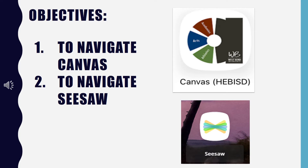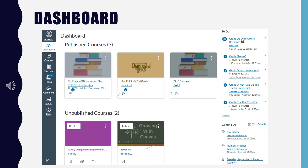The first thing your student will need to do every day is log in to Classlink using the ADFS button. If you are not on the district network, your student will have to log in using their HEB ISD credentials. Each day, your child will log in to Canvas by opening their Classlink page and clicking on the Canvas app.